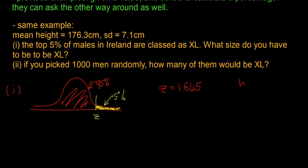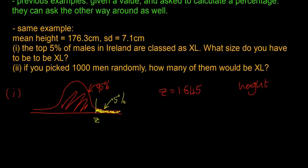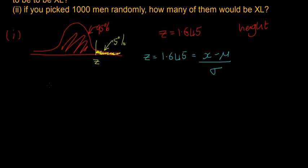And if we look to our formula, X is the height that we're looking for. So X is what we're looking for. So if we stick that into a formula, Z is equal to 1.645 is equal to X minus mu divided by sigma. And we know what mu and sigma are, mean height and the standard deviation up here given in the question.